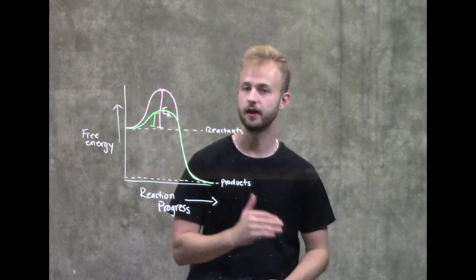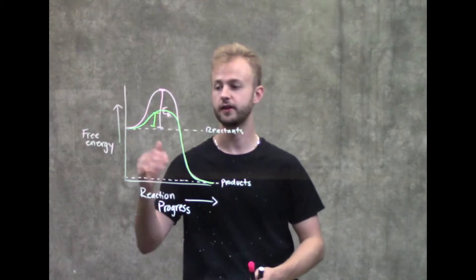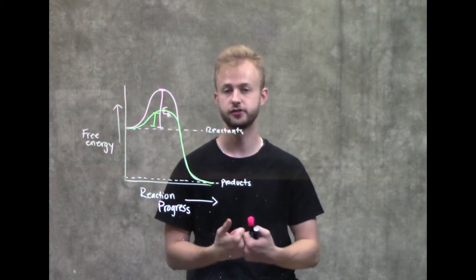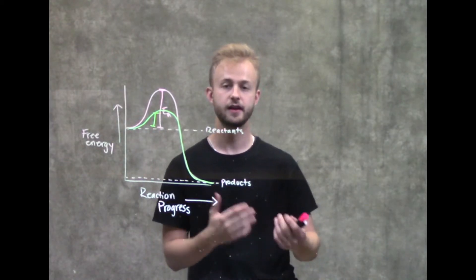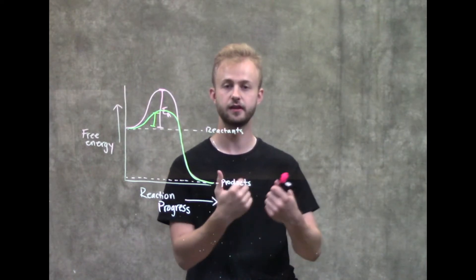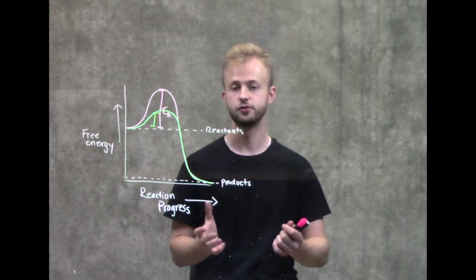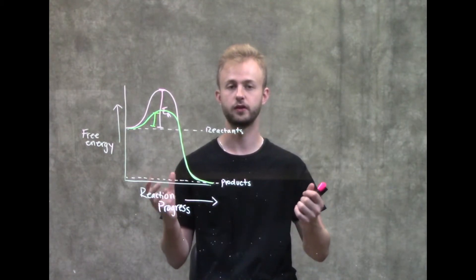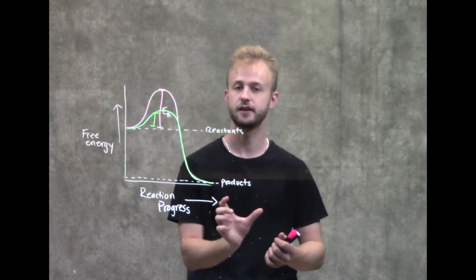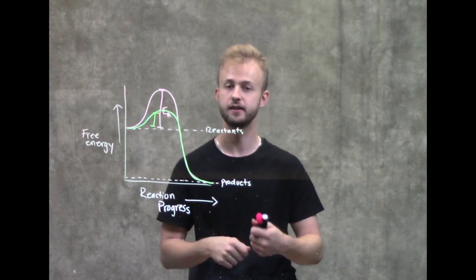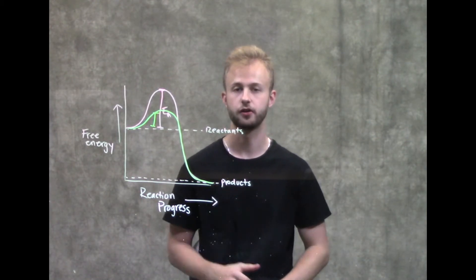To review, enzymes speed up the rate of a chemical reaction by bringing the reactants closer to the transition state, which means that we need less energy of activation to be able to get the reactants to that transition state. It does that by the induced fit model. The substrate will fit very tightly into the active site of the enzyme, and the enzyme will manipulate it to help this reaction go forward.